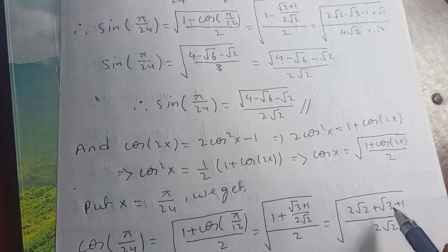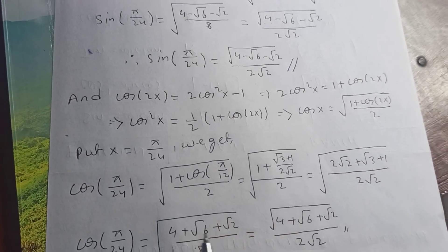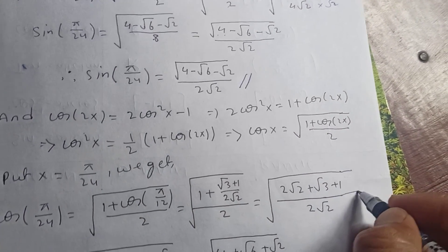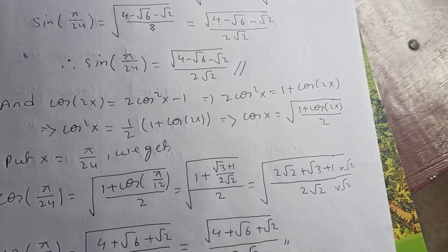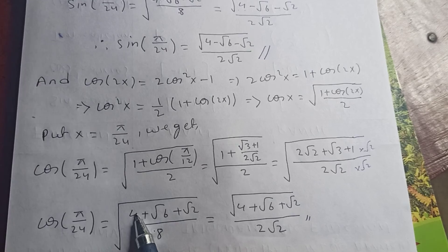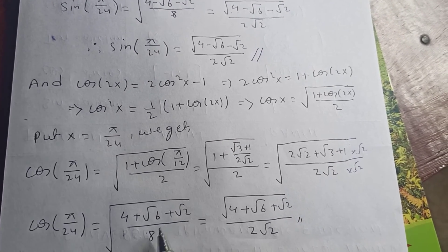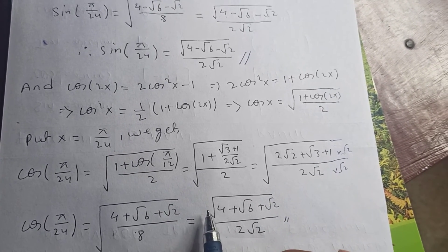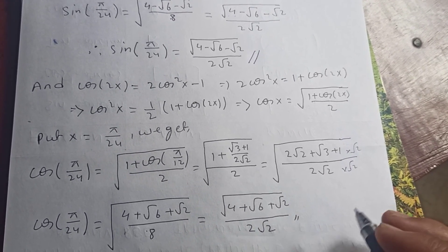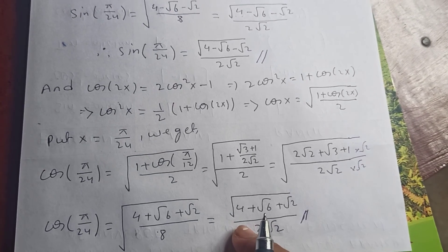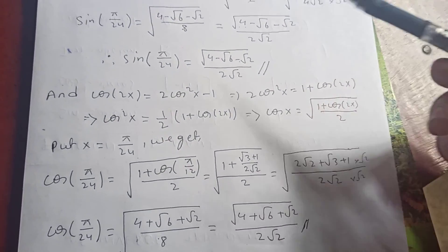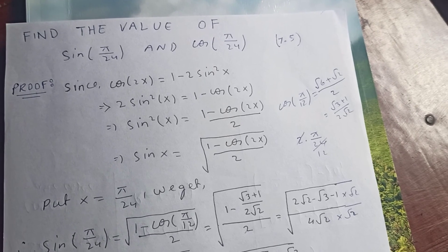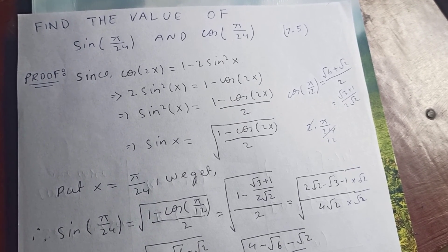Substituting cos(π/12) = (√3 + 1) / (2√2), we get (2√2 + √3 + 1) over (2√2), all under the square root over 2. Multiplying both numerator and denominator by √2, we get (4 + √6 + √2) over 8. Since 8 is 2√2 squared, cos of π over 24 equals square root of (4 + √6 + √2) over (2√2). This is the value for cos(π/24), or equivalently cos(7.5 degrees).